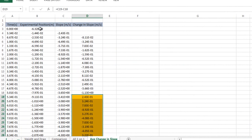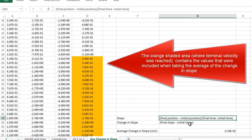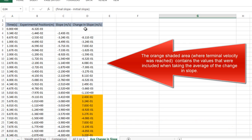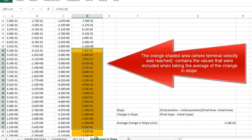I calculated the slope from the experimental position values that I had gotten by doing final position minus initial position divided by final time minus initial time. Then I found the change in slope by doing final slope minus initial slope and displayed those values here.